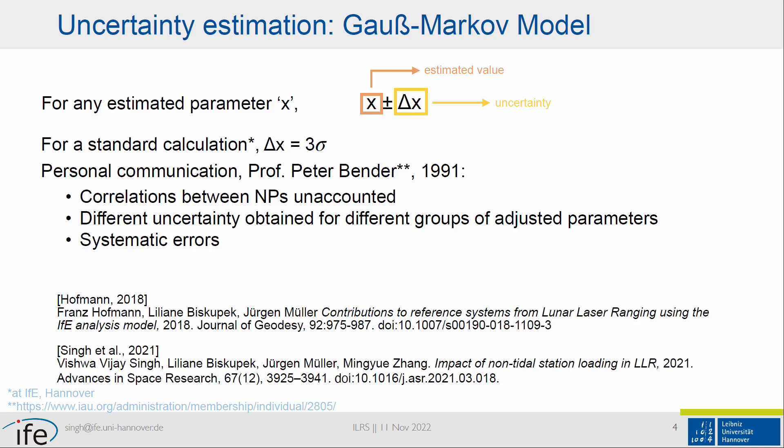We use three sigma for multiple different reasons, which were pointed out even before I was born, in communication between Professor Bender and Professor Eugen Miller. This relates to correlations between different normal points, the uncertainty of different groups of adjusted parameters, and some systematic and random errors. We've been publishing papers with three sigma uncertainty in the past, which was never challenged. But since it was, we decided to look into what's really happening.